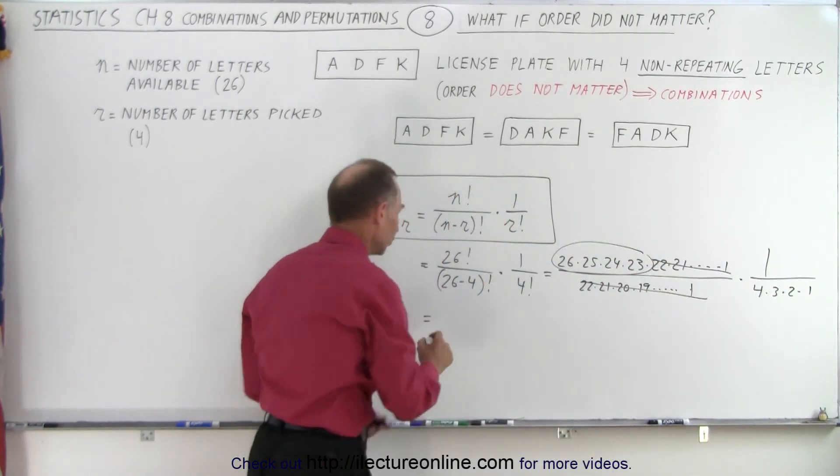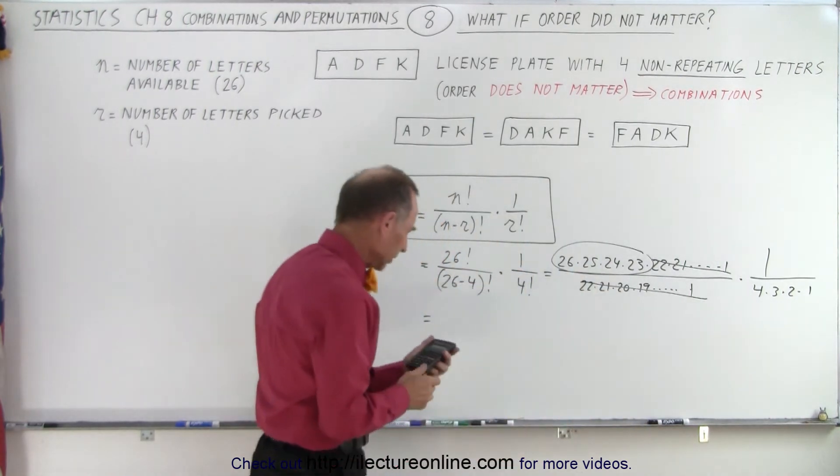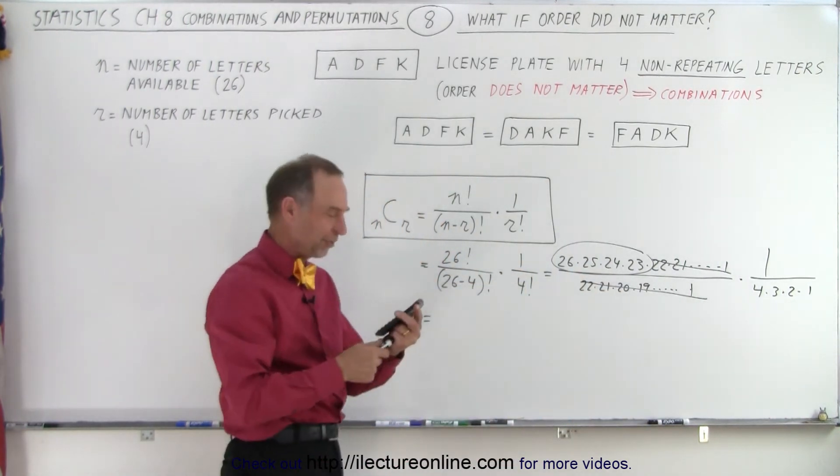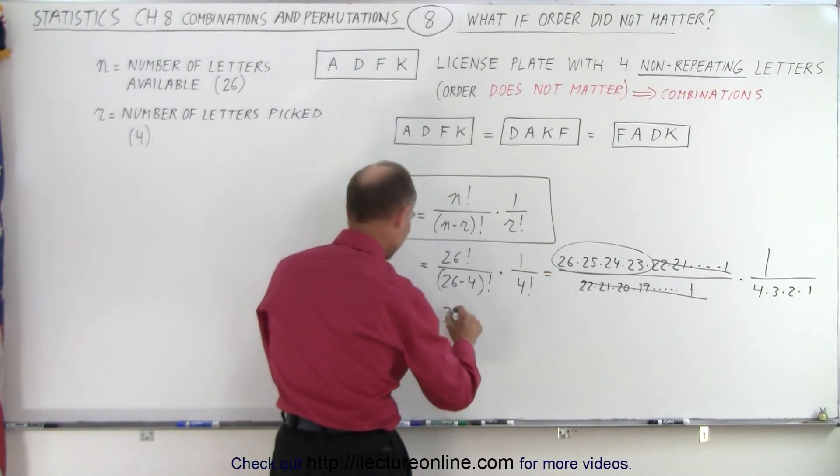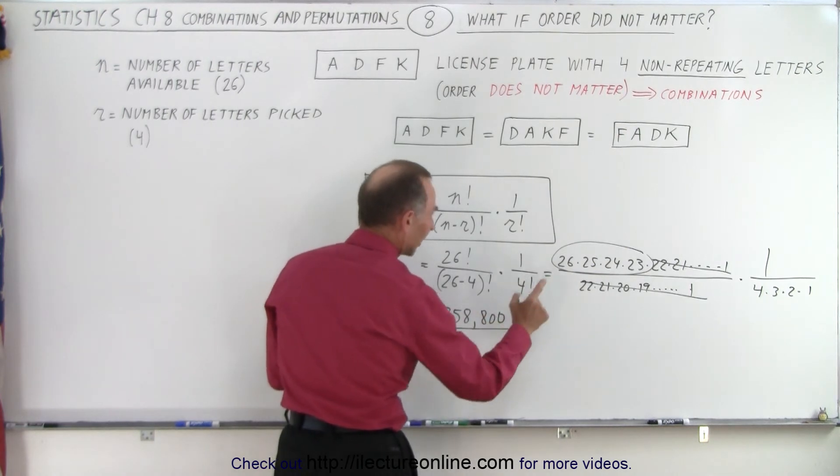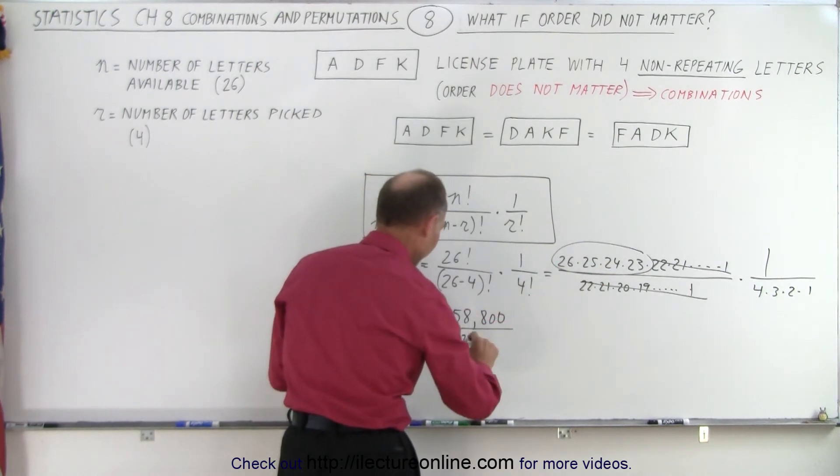So this is equal to, when we calculate the numerator, I still have the number from my previous video on my calculator, the top there ends up being 358,800. And then we have to divide it by 4 factorial which is 6 times 4 which is 24.